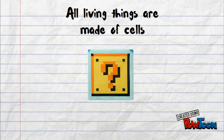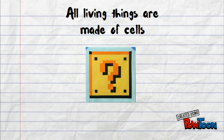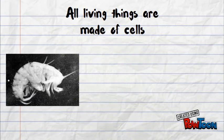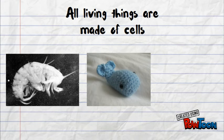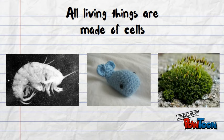This means that everything that's alive, from tiny pond organisms, to blue whales, to the moss growing in the woods, is made of cells, inside and out. So think about how teeny tiny cells are and just try to imagine how many it takes to form something like an elephant or a redwood tree.